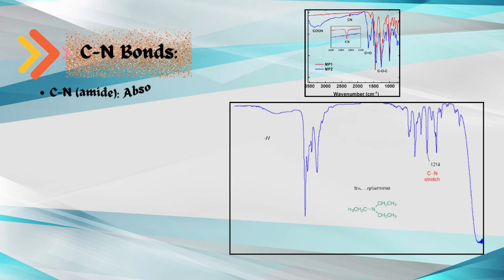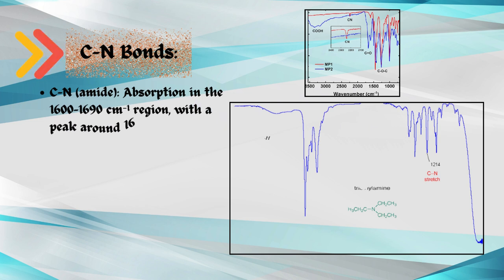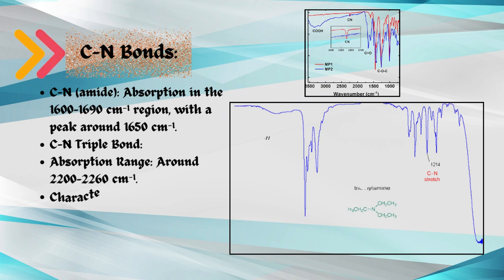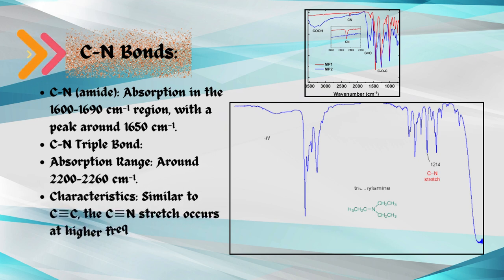Carbon and nitrogen CN bonds. Carbon and nitrogen CN in amide: absorption in the 1,600 to 1,690 per centimeter region, with a peak around 1,650 per centimeter. Carbon and nitrogen CN triple bond: absorption range around 2,200 to 2,260 per centimeter. Characteristics similar to carbon and carbon CC triple bond. The carbon and nitrogen CN stretch occurs at higher frequencies.